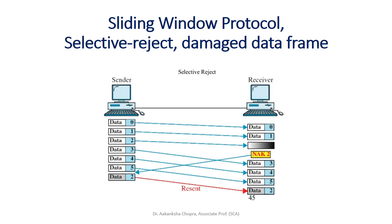For Selective Reject with a damaged data frame, Selective Reject basically means it will only re-send the same data packet for which a negative acknowledgement has been received. So here, even after data frames 3, 4, and 5 were correctly sent and received, NAK 2 came as a negative acknowledgement for frame number 2. Only that frame is re-sent by the sender.